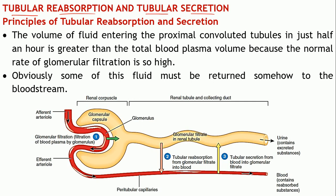Before going into the actual process of reabsorption and secretion, let us understand the principles of these two processes. Filtration of blood takes place at a very fast rate — within about half an hour most of the blood plasma gets filtered out. The glomerular filtration rate is very high, so a very large volume of filtrate is formed, yet the urine output is very small.